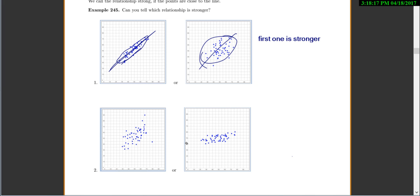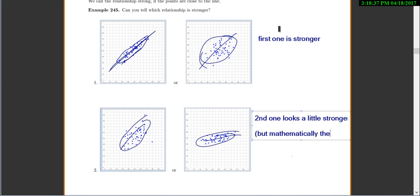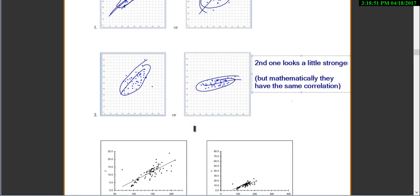On the second two sets, let's see, there's my line, here's my line. I would say the second one looks a little bit stronger. But it turns out they have the same correlation. Now we haven't told you the definition of correlation yet, but we will soon. So correlation is a way that you measure the strength of the relationship. So they actually have the same correlation here. So it's kind of hard to tell by eye.